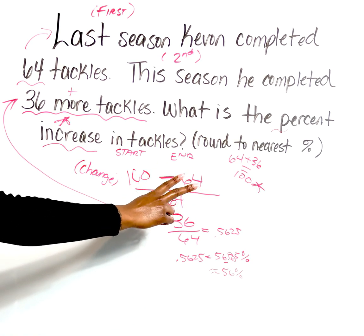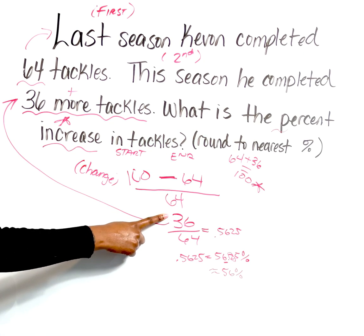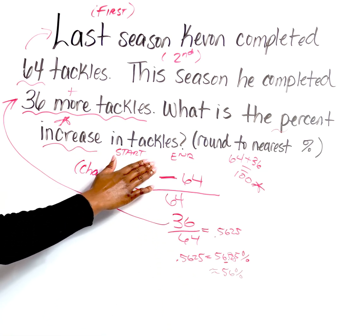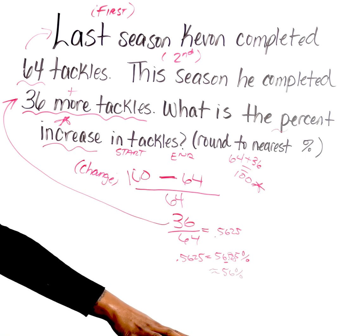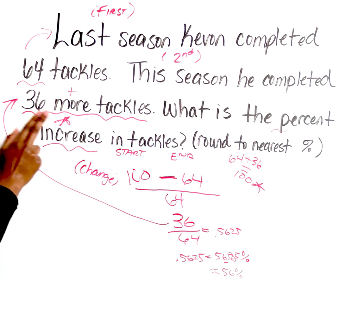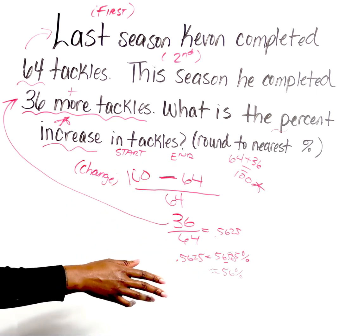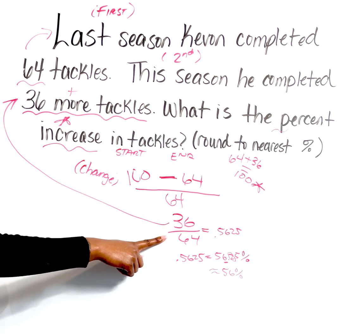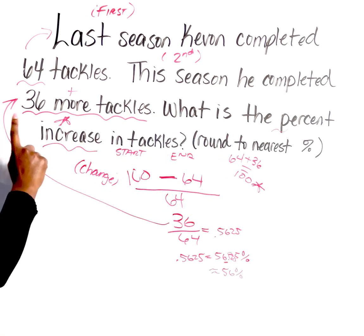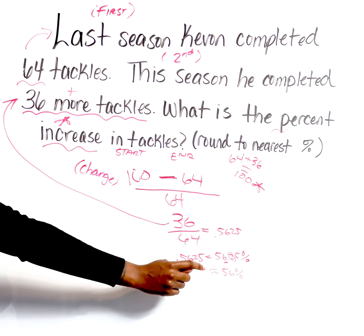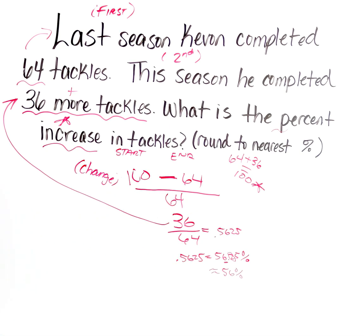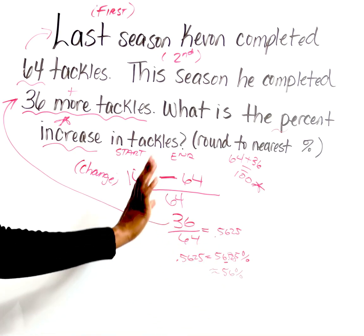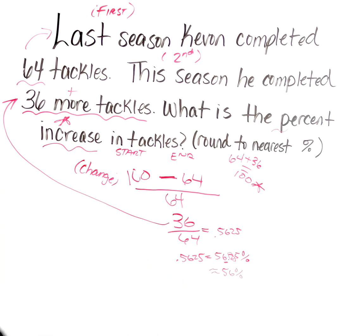From there, I subtracted my two values and simplified, and we're back to 36 over 64. Why? Because 36 represents the change, and the reason we subtract is because we're looking for the change. If you're comfortable with these questions and can identify the change versus the start and end point, you can just set up your fraction and convert to a percentage. Otherwise, stick with start and end and simplify all the way down. Convert from fraction to decimal, then decimal to percentage — we got 56.25%, and rounding to the nearest percent gives us roughly 56%.